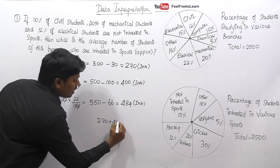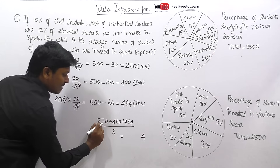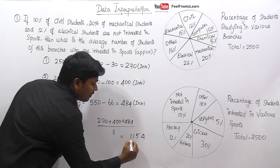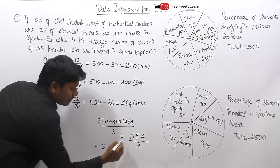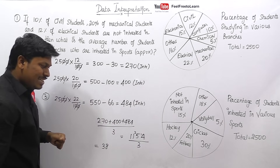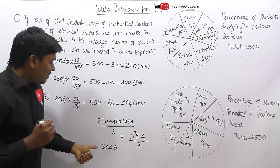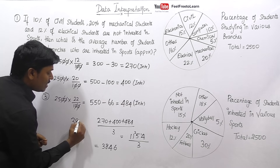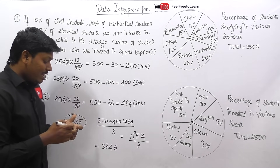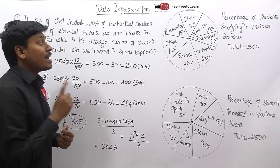Adding: 270 + 400 + 484 = 1154, divided by 3 gives approximately 384.6. So the answer is approximately 385 — that is the average number of students across these three departments who are interested in sports. Check the options for 384 or 385 accordingly.